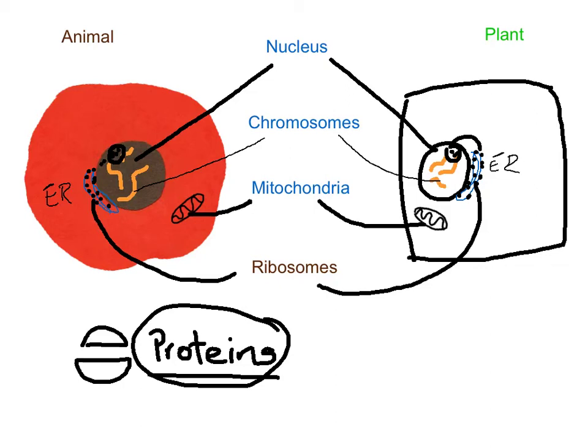You might be thinking: what is the big deal between animal and plant cells? They look pretty much the same. Well, up to now I've been doing this intentionally to show all the structures that are similar in both. In a few minutes I'm going to show you different organelles that you will see only on plant cells. But let's mention one last common organelle before we jump to the differences.